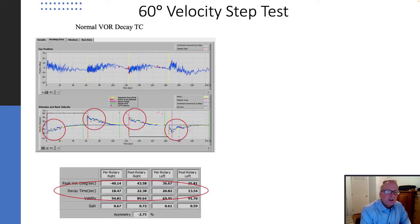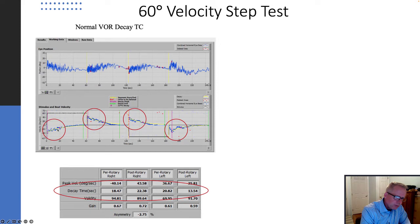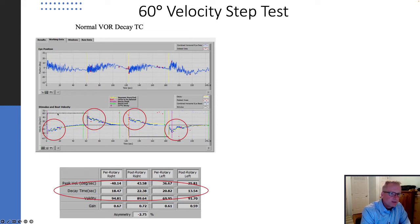Here's an example of that normal 60-degree step test. You have this best-fit line that produces the peak response, and this marked position drops that to 37% of its peak value — or set another way, a drop of 63%.